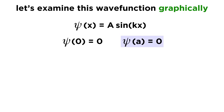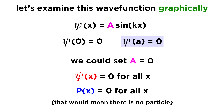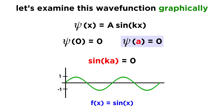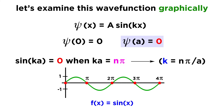Now examining the other boundary: psi of a must also equal zero. Setting constant A equal to zero is not useful since it gives no particle. The other possibility is that sine of ka equals zero. Since sine equals zero at every multiple of pi, sine of ka equals zero when ka equals n·pi, where n is any integer. This means k equals n·pi over a.